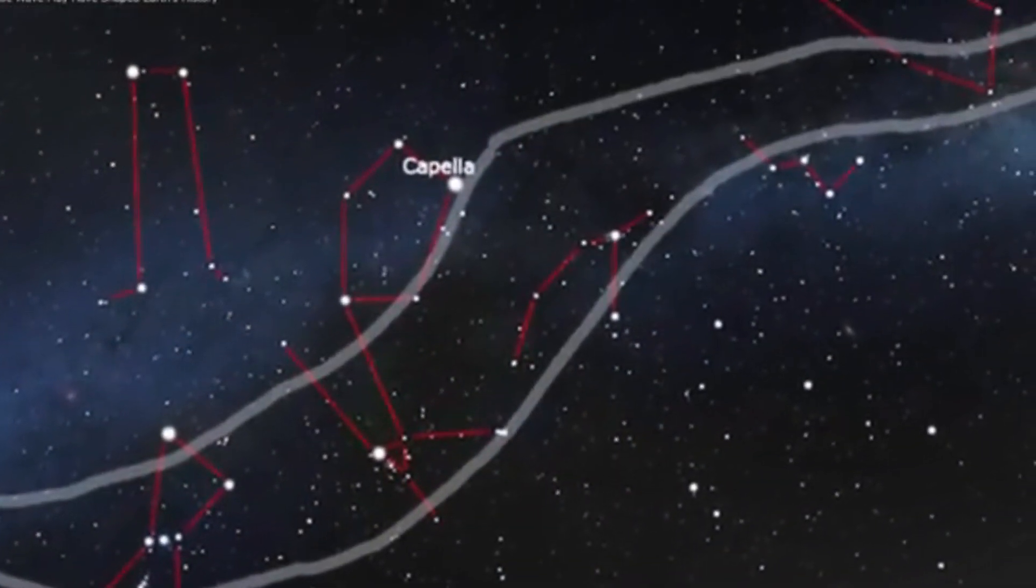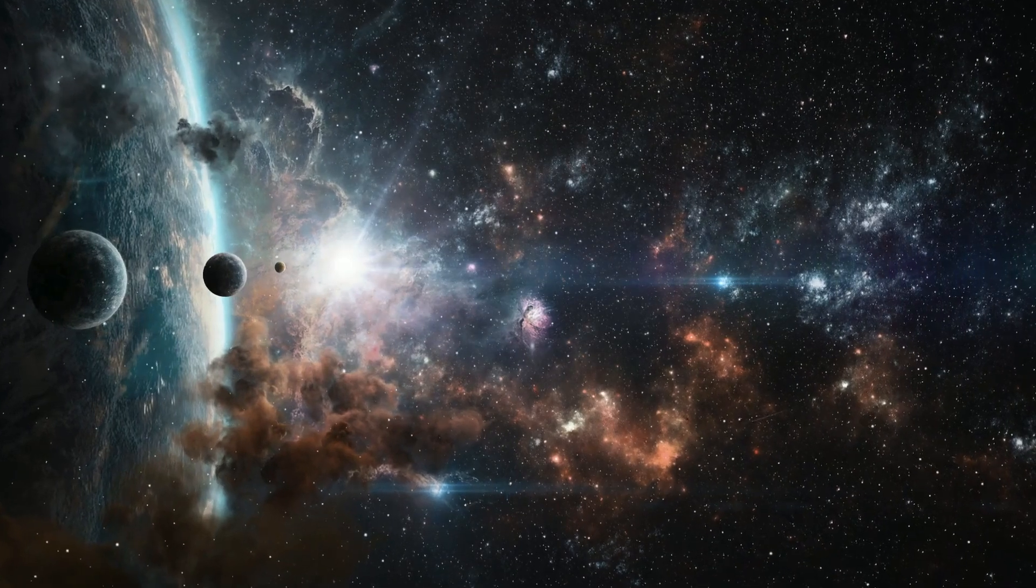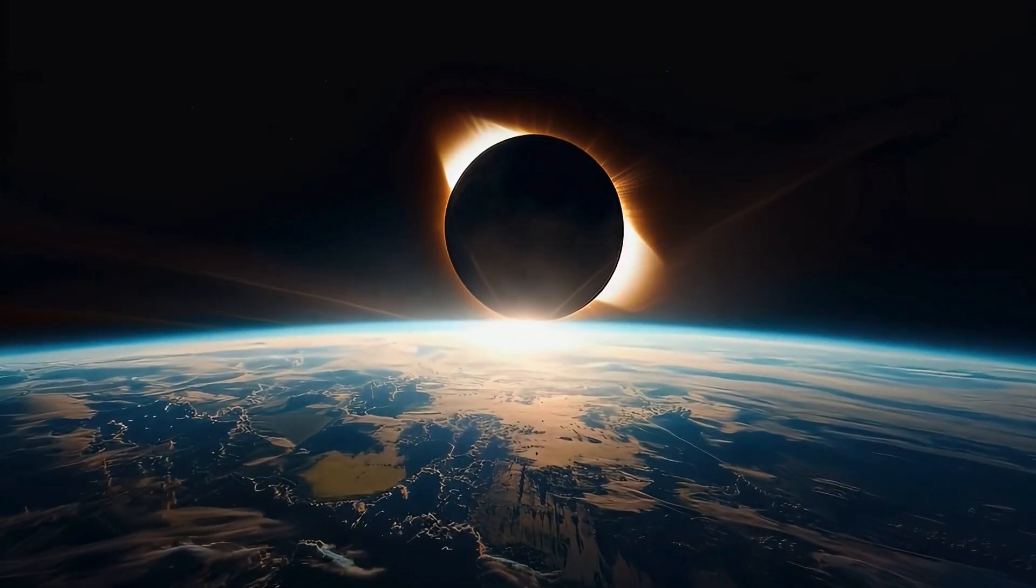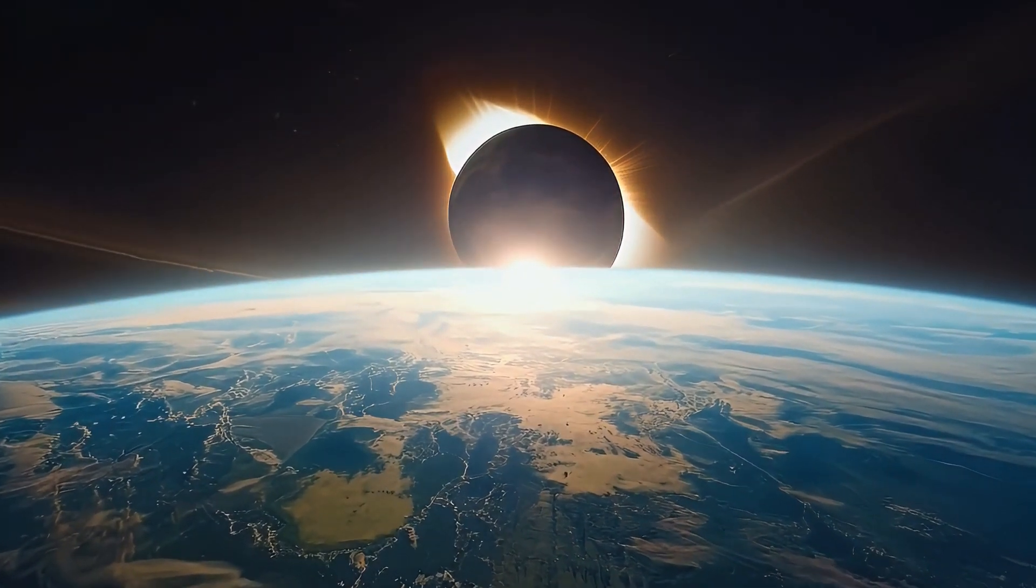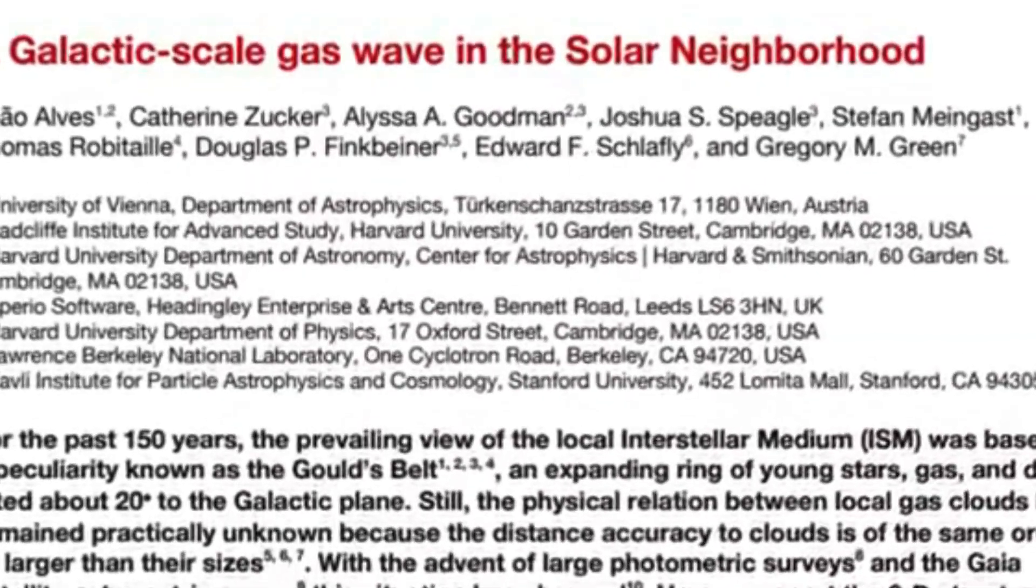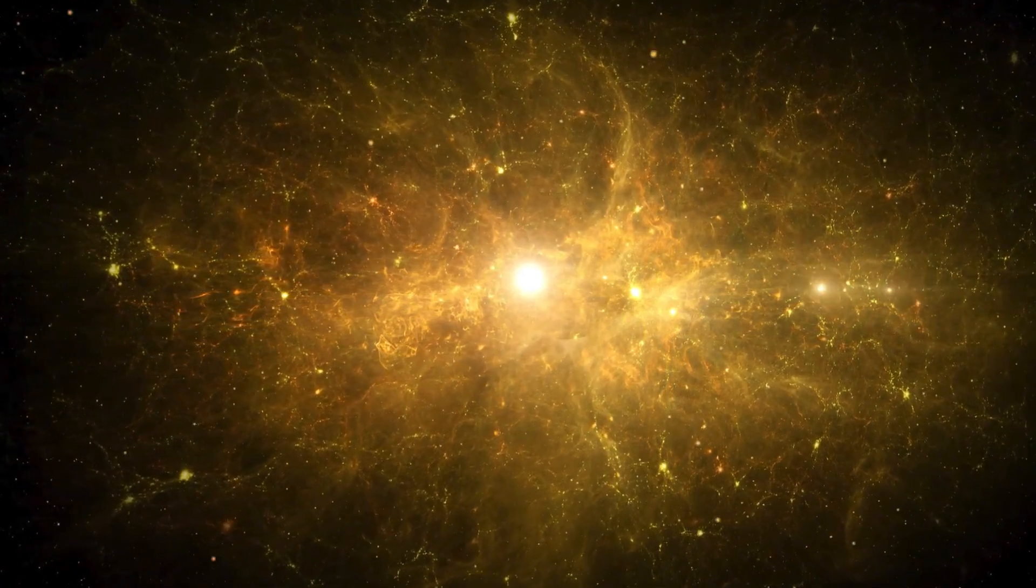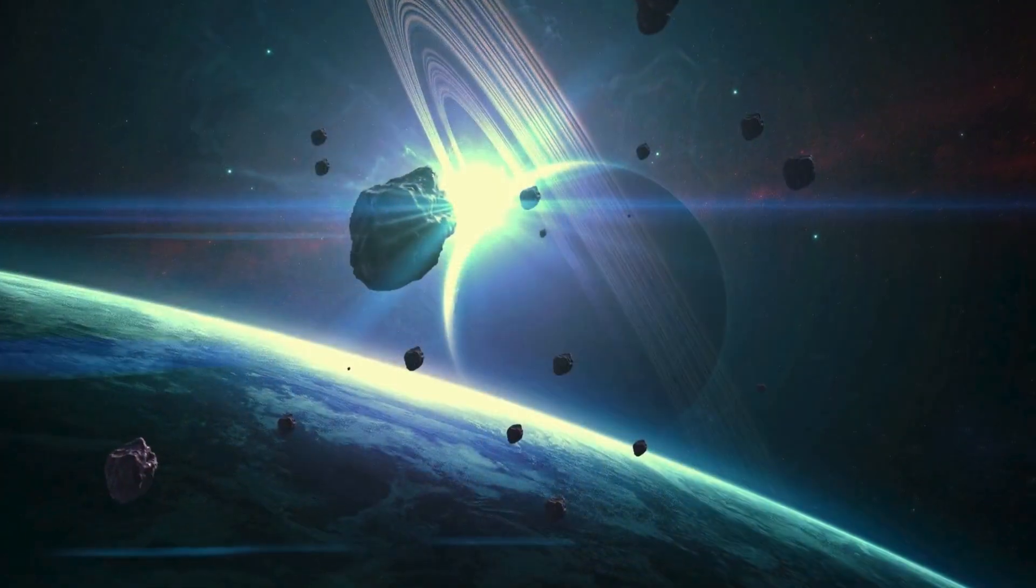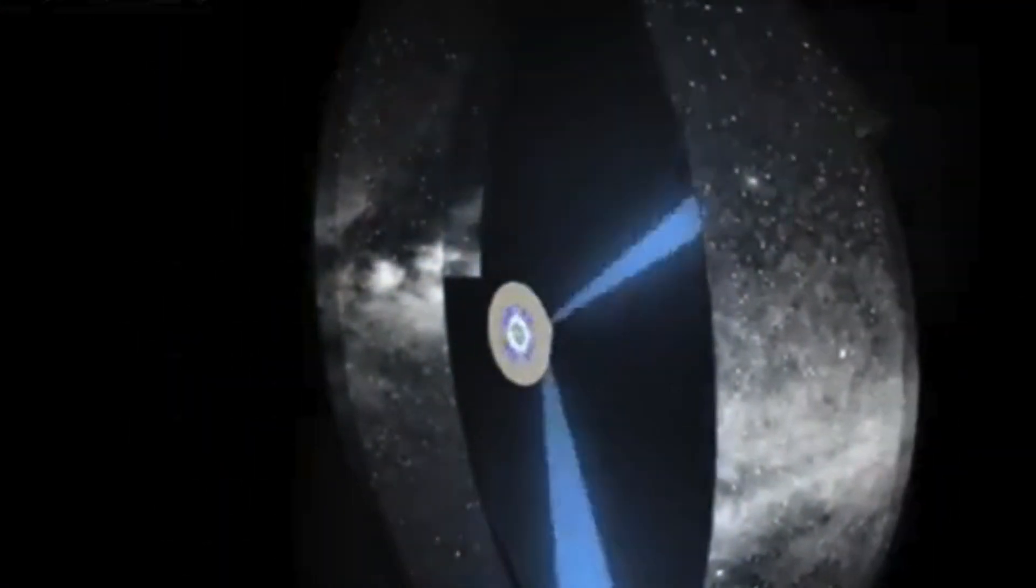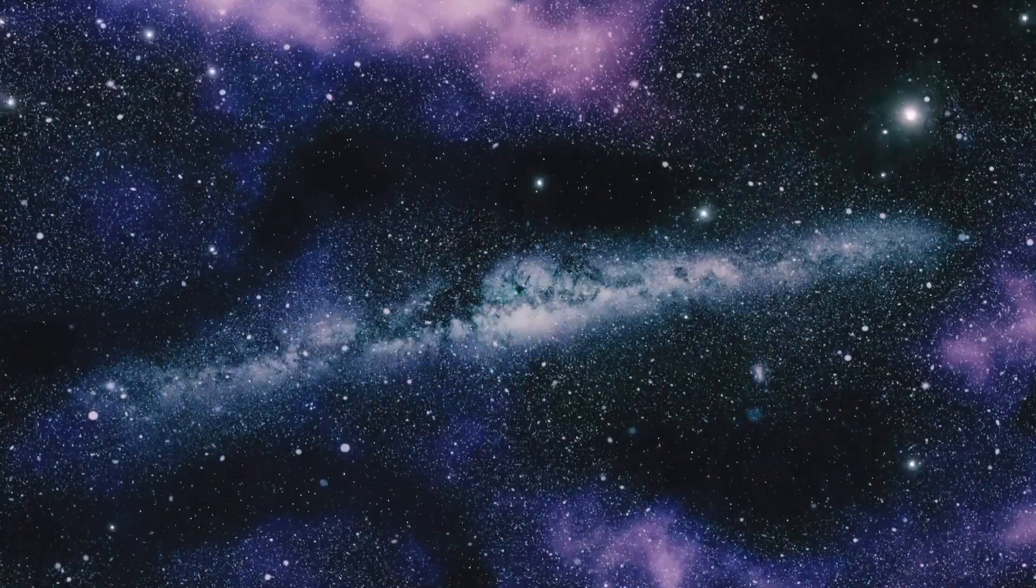A more compact heliosphere means more interstellar particles, including dust and cosmic rays, could have entered the solar system, potentially impacting planetary atmospheres, including Earth's. This discovery connects our solar system's galactic journey with changes in the interstellar environment. While space might seem like an empty void, it is filled with interstellar gas, dust, and radiation that can influence planetary climates and even evolutionary processes over millions of years.